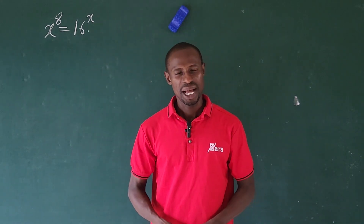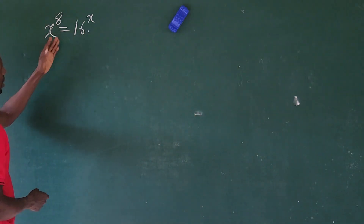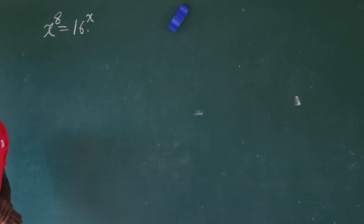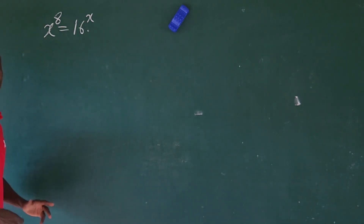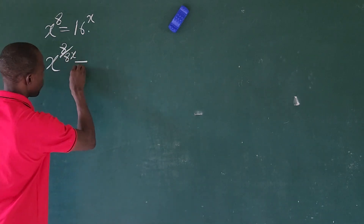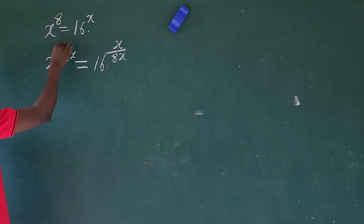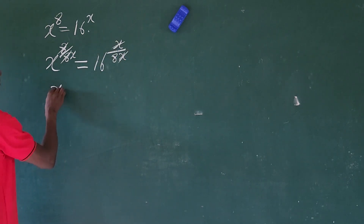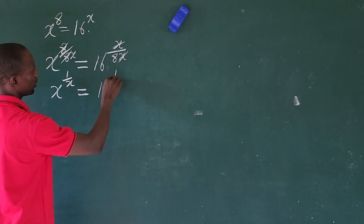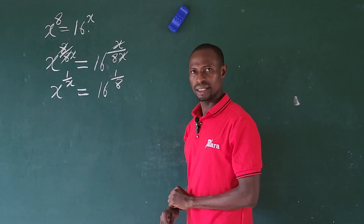Now let's look at the second question using the first approach. The question is x to the power of 8 equals 16 to the power of x. The exponents are 8 and x, so we multiply them to get 8x. We divide each exponent by 8x, giving x to the power of 8 over 8x, equal to 16 to the power of x over 8x. The x's and 8's cancel, leaving x to the power of 1 over x equal to 16 to the power of 1 over 8.